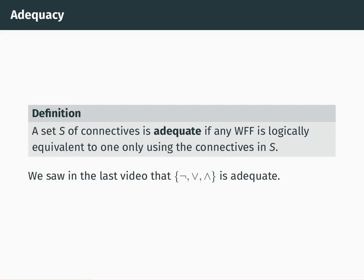Here's the definition of adequacy. A set of connectives is adequate if any well-formed formula — and what I mean there is any well-formed formula using not, and, implies, and or — is logically equivalent to one only using the connectives in that set. So what we've shown is that the set just containing not, or, and and is adequate.